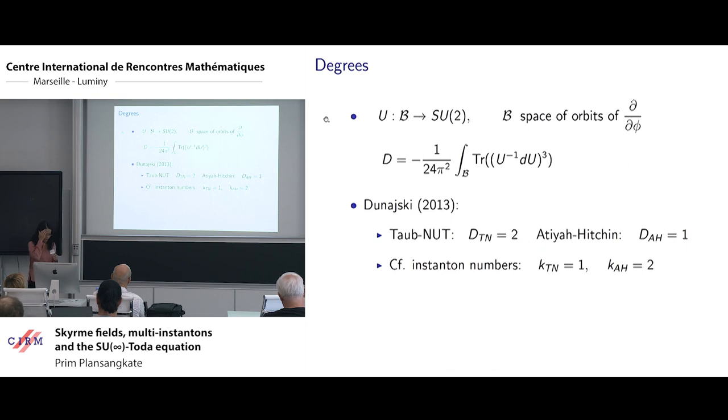I want to comment on one feature of this construction which is different from the original one by Atiyah-Manton, who constructed the Skyrme field from Yang-Mills instanton on flat space. In that case, the topological degree and the instanton numbers are equal, but this is not the case here because the instanton number for the Taub-NUT is one, where this is two.